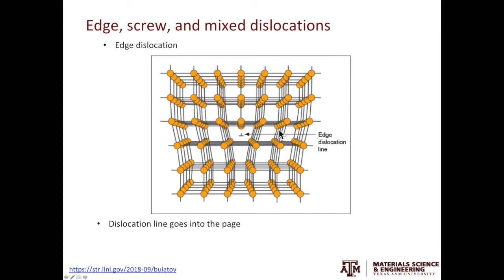Let's look at the edge dislocation first. In the example shown here, the dislocation line goes into the page. Next, we'll introduce a very important concept: the Burgers vector. To find the Burgers vector, we construct the Burgers circuit. Away from the dislocation core, we draw a loop — counting 1, 2, 3, 4, 5 horizontally, then down 1, 2, 3, 4, then 1, 2, 3, 4, 5 horizontally again, then up 1, 2, 3, 4. You see the Burgers circuit has a gap, and the additional vector needed to complete the circuit is the Burgers vector.